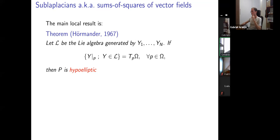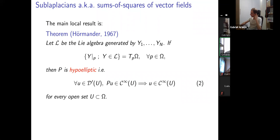We recall the main local result, which is of course Hörmander's theorem: if the Lie algebra generated by the vector fields spans the whole tangent space to the manifold pointwise at every point, then P is hypoelliptic — meaning that for every open set in the manifold, if Pu is smooth then u is itself a smooth function. This is a local statement and holds for every open set.